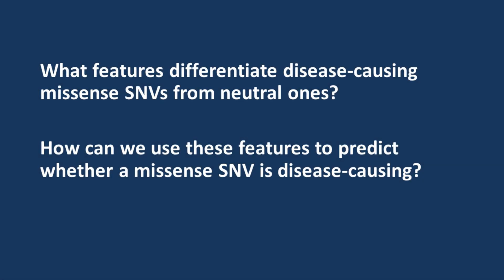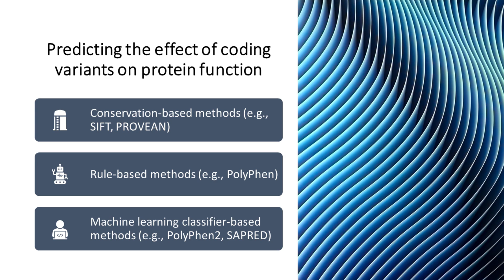What features differentiate disease-causing missense SNVs from neutral ones, and how can we use these features to predict whether a missense SNV is disease-causing or not? Instead of working with nucleotide changes, almost all prediction methods of missense variations work directly on amino acid changes. Over the years, a number of successful methods were developed to predict the effect of coding variants on protein function, based either on sequence alone or sequence plus structure.